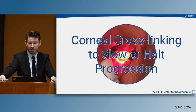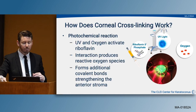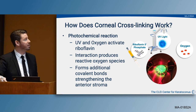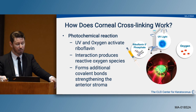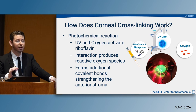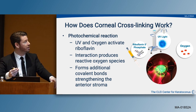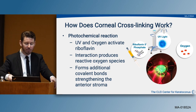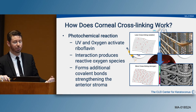Corneal collagen cross-linking is a photochemical reaction within the corneal stroma and collagen. We use riboflavin in the form of Photrexa, and once the cornea is totally saturated, apply UV light. Combined with oxygen, this produces reactive oxygen species within the cornea, creating more covalent bonds to strengthen the anterior cornea—essentially taking a weak structure and adding bonding to create a stronger one.